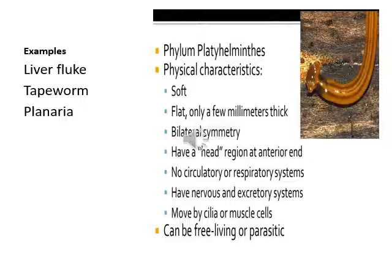Flatworms take in food and expel waste through the same opening. They move by cilia or muscle cells, and can be free-living or parasitic. Planaria and tapeworms live in the human body — tapeworms can grow 15 to 30 centimeters inside a human. Examples of Phylum Platyhelminthes are liver fluke, tapeworm, and planaria.